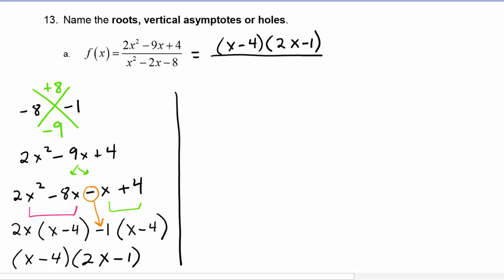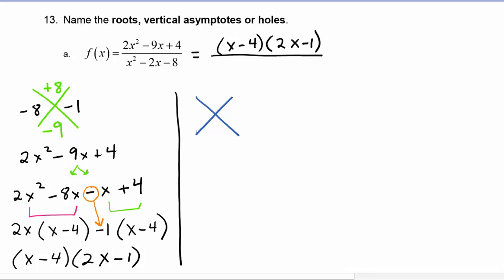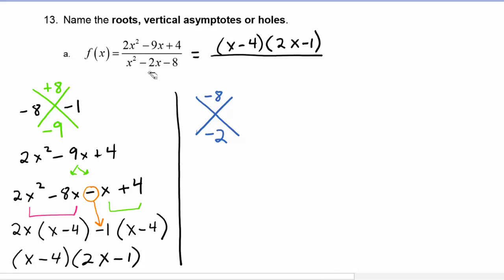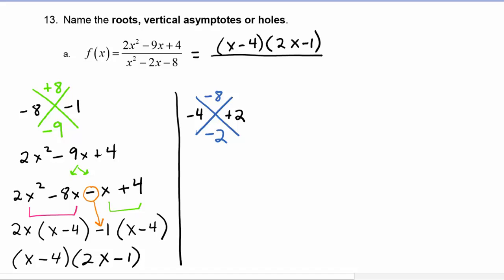Now looking at the factorization for the denominator, again using the AC method, we need two numbers that multiply to be negative eight but add to be negative two. Going through the factors of negative eight, we find that negative four and positive two work. So x squared minus two x minus eight factors to (x minus four)(x plus two).